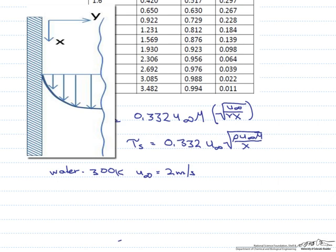So when we look at these properties, we find that the density is 997 kilograms per meter cubed, and the viscosity is 855 times 10 to the minus 6 newton seconds per meter squared.